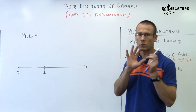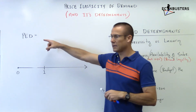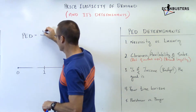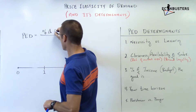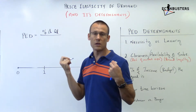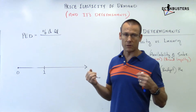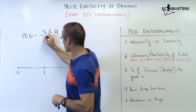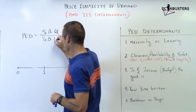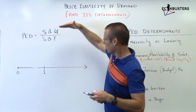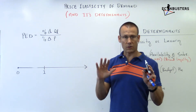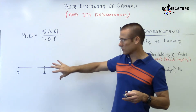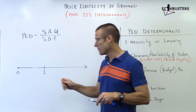Let's go through some basics first. PED — price elasticity of demand. What is the formula? Hopefully we're getting really good at this. It is the percent change in QD. Remember, QD — quantity demanded — is the dependent variable. It is dependent upon price. Price changes, QD changes. So it's percent change in QD over percent change in price. We've got a numerator and a denominator.